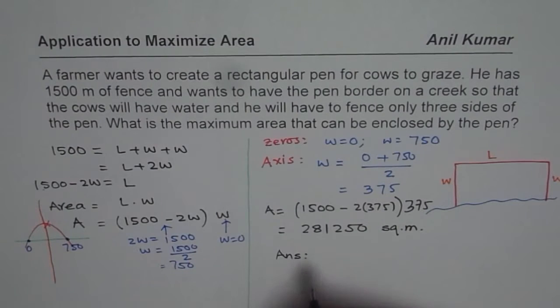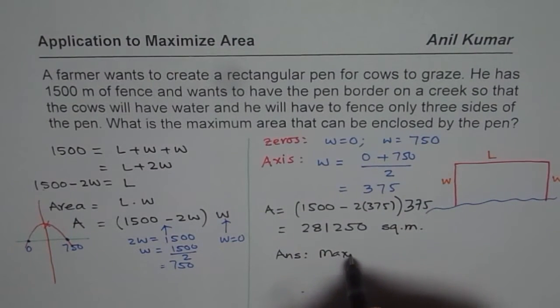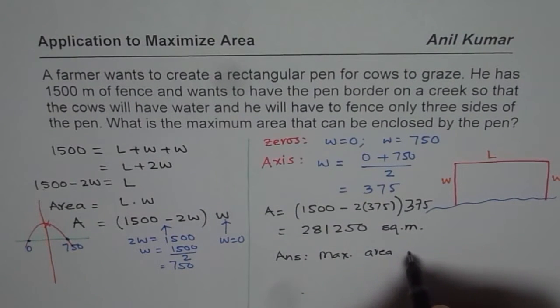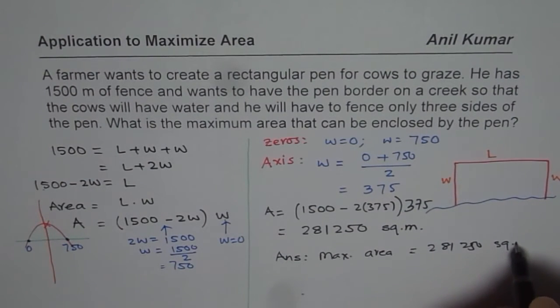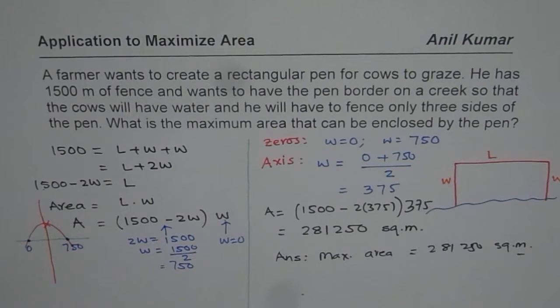So that is how you can find the area. And now, write down the answer very clearly. That is to say, that the maximum area equals to 281,250 square meters. Include units in your answer. Thank you and all the best.